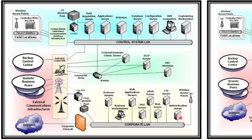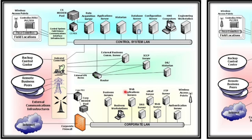The corporate LAN includes an authentication server, FTP server, web server, email server, DNS, web application server, business workstations, and corporate PBX systems. There is one firewall connecting the corporate network to the internet, but it is unclear whether the backup center or remote business peers are also connected to the internet. This is a relatively flat network with little segmentation, and we cannot confirm whether antivirus is installed — making it a quite open network, easy to intrude due to lack of zoning and technical controls.